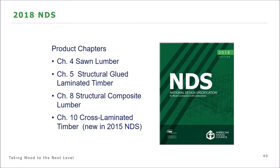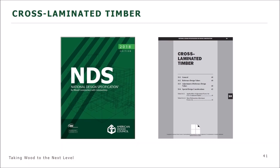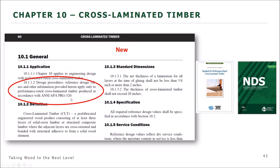The 2021 code changes will include a new definition for mass timber construction. Mass timber can include nail-laminated timber, glue-laminated timber installed flat-wise, structural composite lumber, and CLT. For design procedures in the NDS, the assumption is that all CLTs are manufactured under the ANSI/APA PRG 320 provisions. If a CLT panel is not manufactured under these provisions, you would not be able to use the NDS for its design.